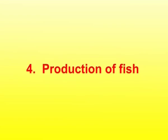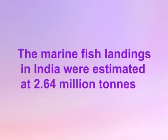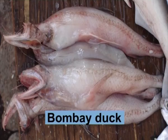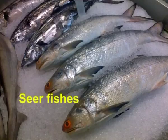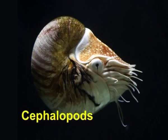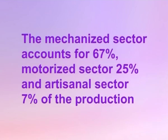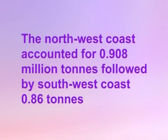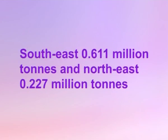Now let us come to the production of fish. The marine fish landings in India were estimated at 2.64 million tons. There has been a consistent rise in production year by year owing to enhanced catches of sharks, oil sardines, Bombay duck, ribbon fishes, carangids, seer fishes, tunas, penaeid prawns, and cephalopods. The mechanized sector accounts for 67%, motorized sector 25%, and artisanal sector 7% of production. The northwest coast accounted for 0.908 million tons, followed by southwest coast at 0.86 million tons, southeast at 0.611 million tons, and northeast at 0.227 million tons.